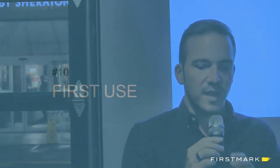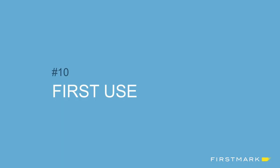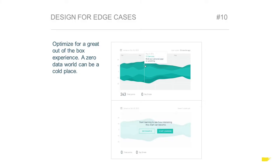Our tenth principle is the idea of first use — designing for edge cases that we normally take for granted or forget about. We should always concentrate on optimizing for a great out-of-the-box experience, a great onboarding experience for first-time users. Because when you land on Codecademy or any other product for the first time, it's a very daunting place if it's empty. A zero state is a cold place, and you don't want that for your user experience.